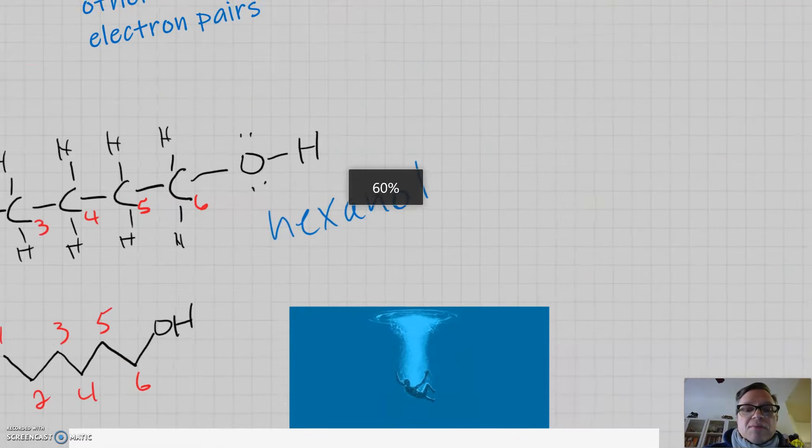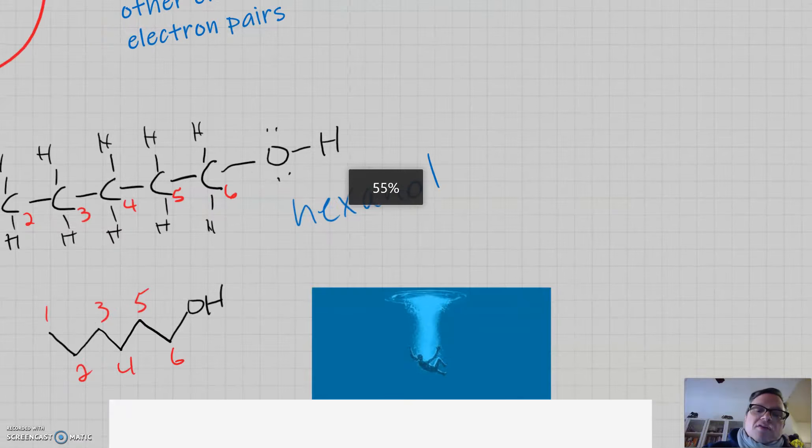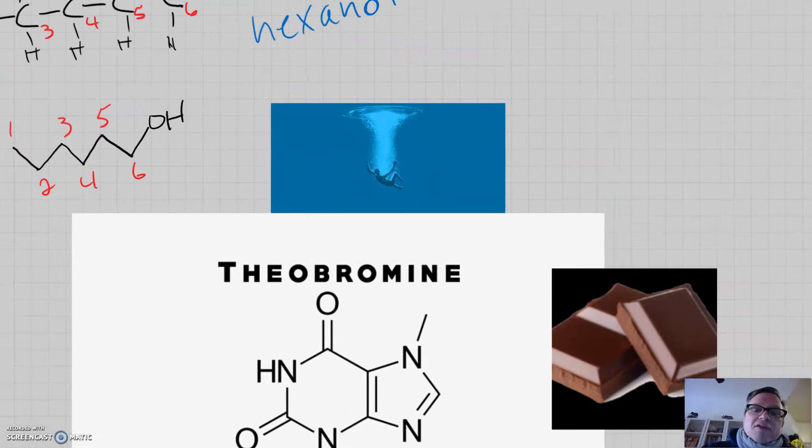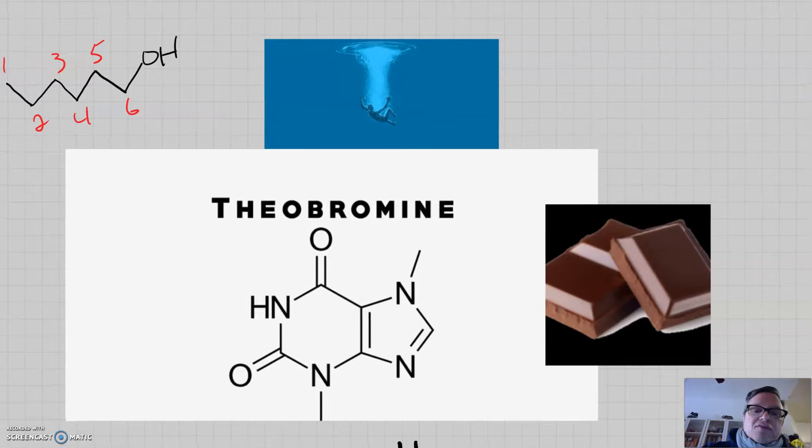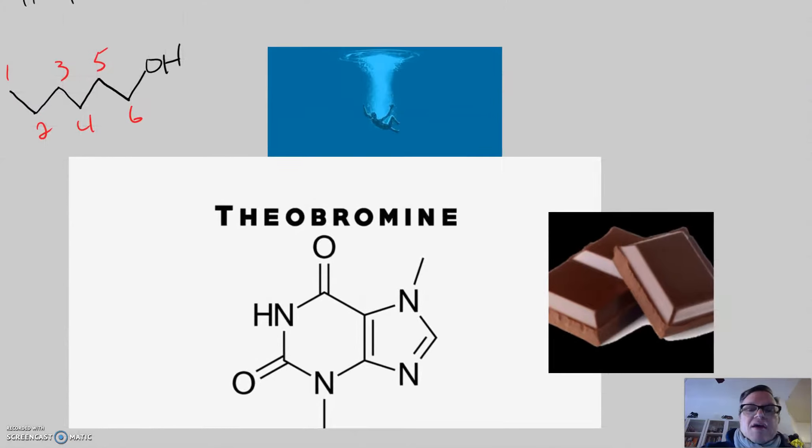Alright. Are we ready to jump in the deep end? So, what I'd like you to try now is to take a skeletal structure and work backwards to create a Lewis structure. Pause the video. See if you can draw this structure as a Lewis structure. Unsimplify it.